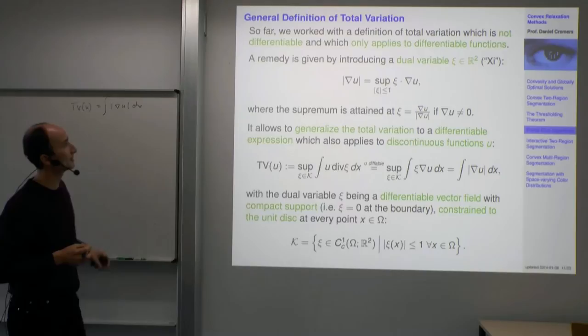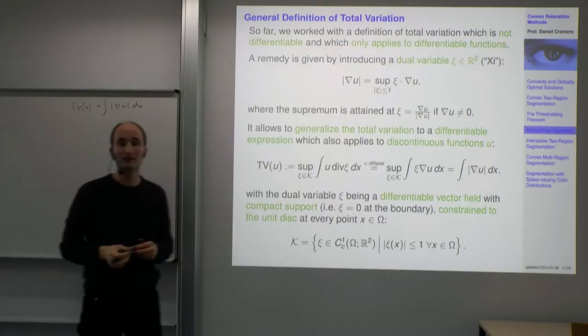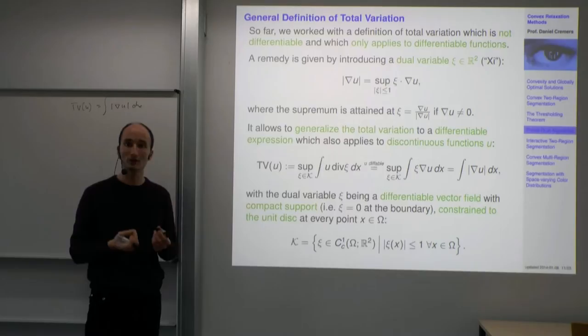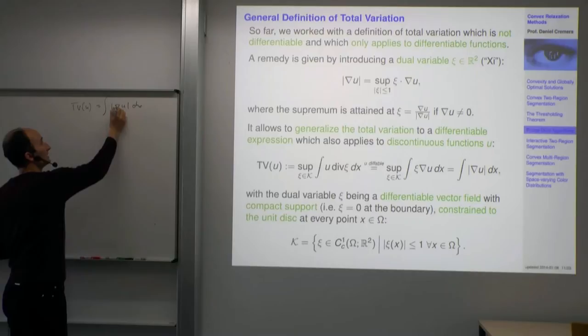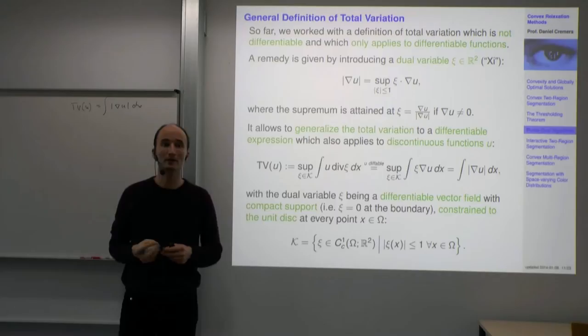The first shortcoming is that since it is a norm, it's not actually differentiable with respect to U, and so in terms of optimization, doing a gradient descent would require you to compute a gradient. The second shortcoming is that this definition does not apply to functions U that are not differentiable.